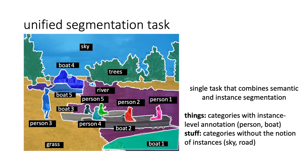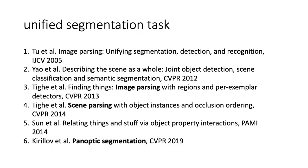In what follows, I will use the notion of things and stuff categories. Thing categories have instance-level annotations; stuff categories do not. While instance segmentation usually works with things only, semantic segmentation commonly uses both things and stuff classes. The idea behind panoptic segmentation is to unify both tasks. The idea is not new — there were papers considering some kind of unification more than 10 years ago — but it did not become a mainstream task, mainly due to the lack of appropriate data and proper evaluation. The most recent formulation is panoptic segmentation, where panoptic means seeing everything at once.